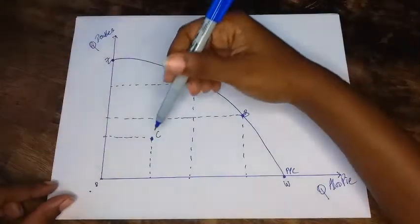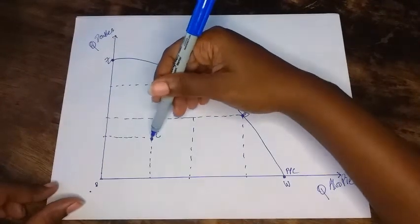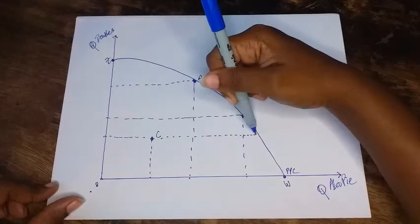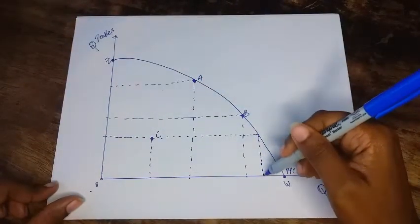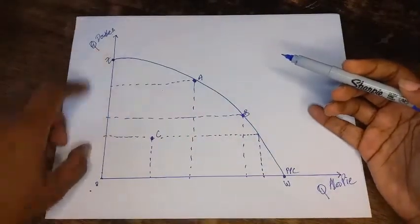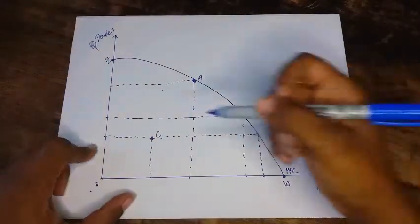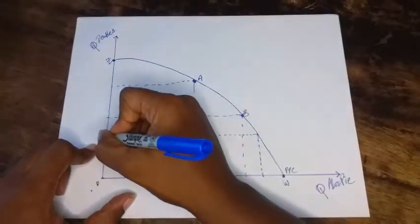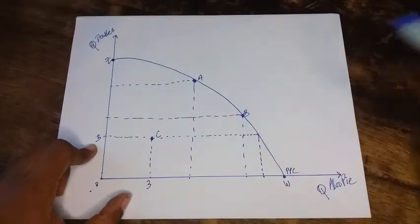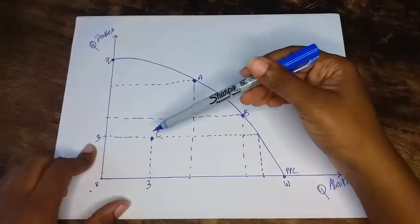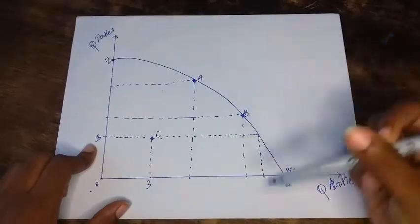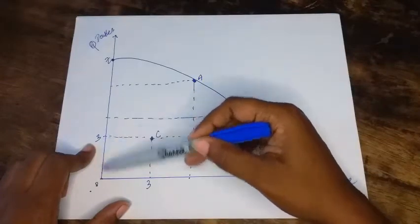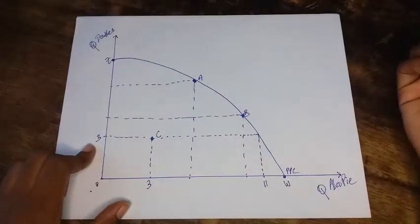For example, if you can get more units of aloo pie without giving up any doubles. So for example, let's put some numbers. Let's say this is three units of aloo pie. This is also three units of doubles. It means then that we can get more units of aloo pie. Let's call this 11. We can get more without having to sacrifice any doubles. So it is inefficient.